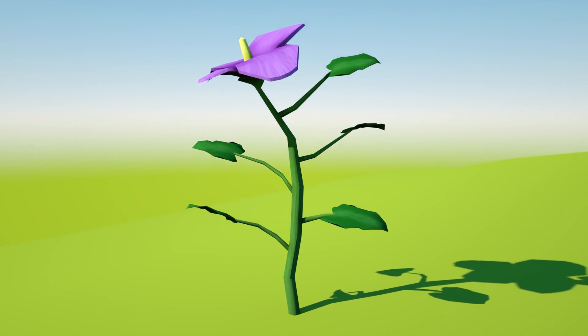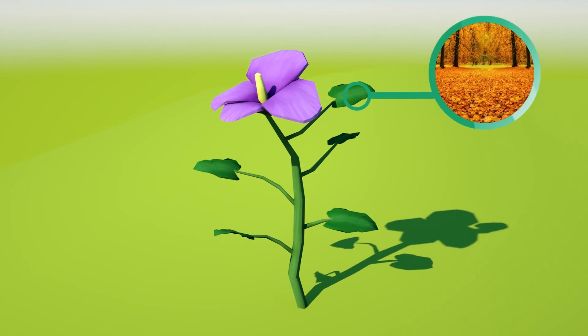In autumn, light is scarce. Chlorophyll levels drop down and leaves turn yellow or brown.